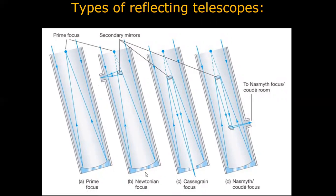The first type is called the prime focus. Basically, we use a tube with a curved mirror at the bottom, and the light gets reflected and focused into one point. It uses only one focus point, so we call this the prime focus reflecting telescope. We keep the eye at that point and observe the object.